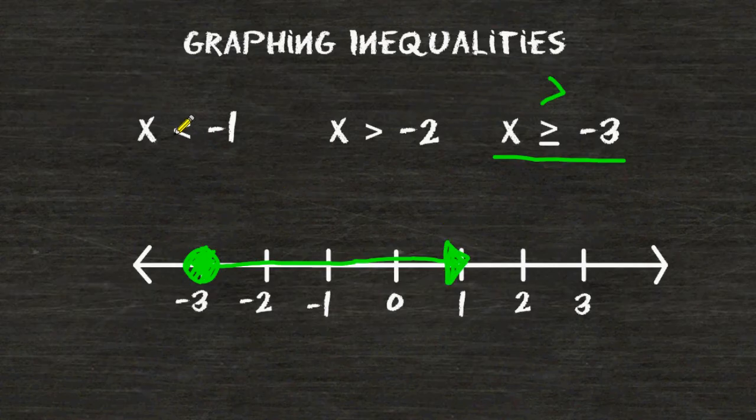When we had the less than symbol right here, it looks like an arrow that's pointing to the left. So when you graph this inequality, the arrow that you draw on the number line must also be pointing to the left.